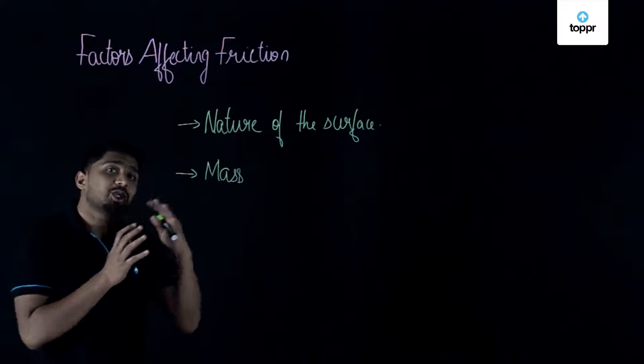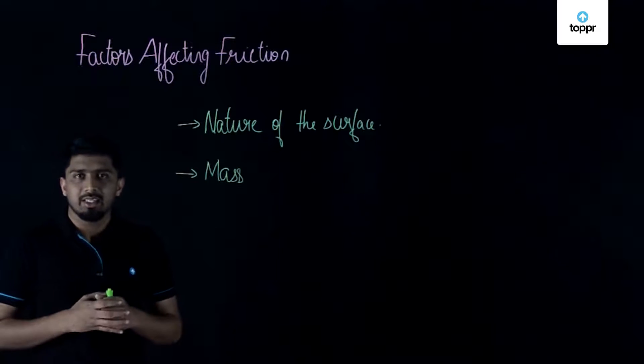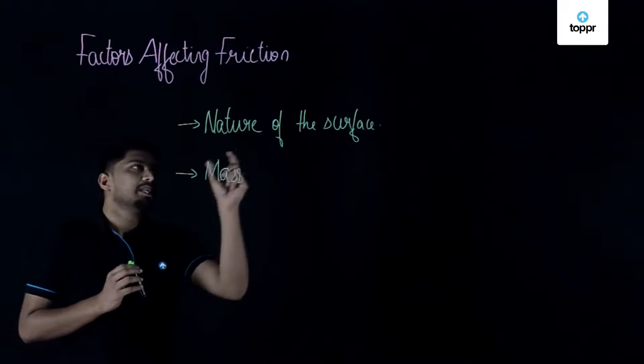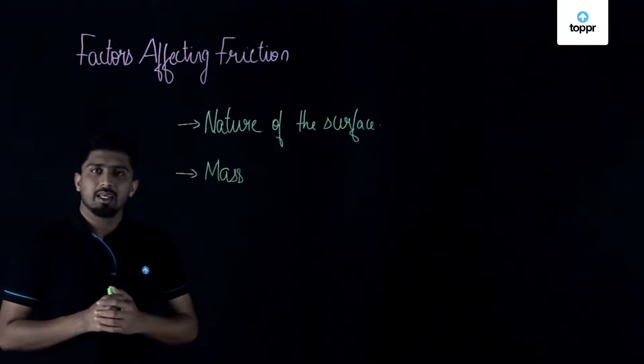So that the friction will be more on a 50 kg sac when we are comparing it with a 10 kg sac. So, nature of the surface and mass are the two factors which affect friction.